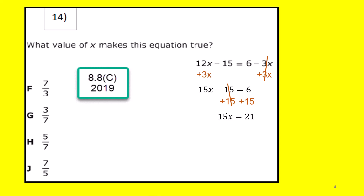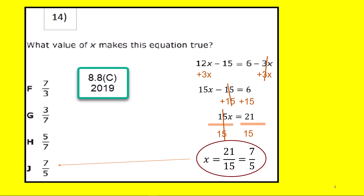Finally, we divide both sides by 15, cancel the 15, and 21 divided by 15 is an improper fraction which can be reduced to 7 over 5. It's okay to leave it improper this way.